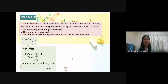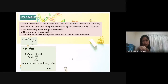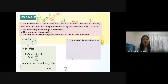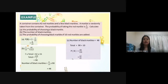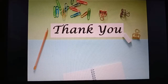(c) Find the probability of choosing a black marble if 10 red marbles are added. The total becomes 90 + 10 = 100. The number of black marbles remains 48. So the new probability of choosing a black marble is 48/100, which simplifies to 12 over 25. If you find this video helpful, please subscribe and share. Thank you.